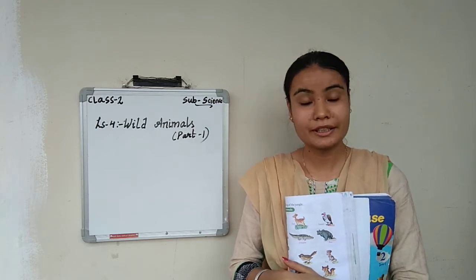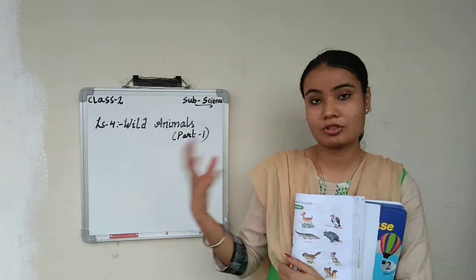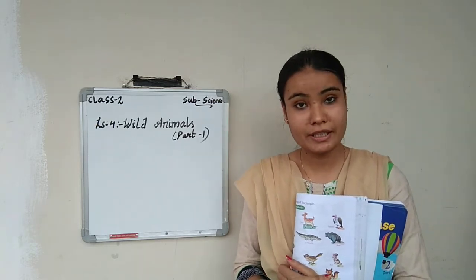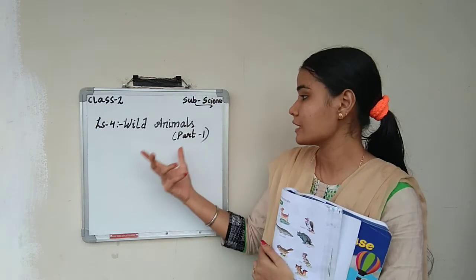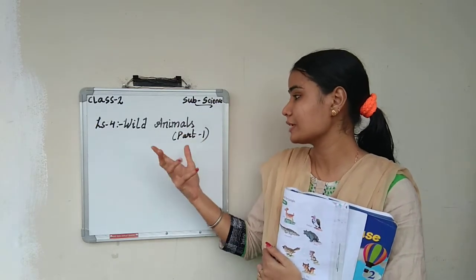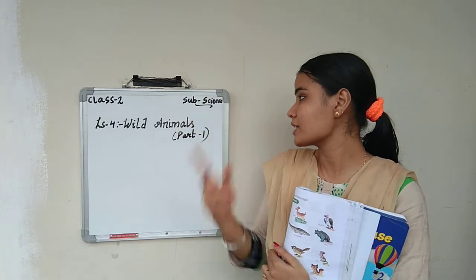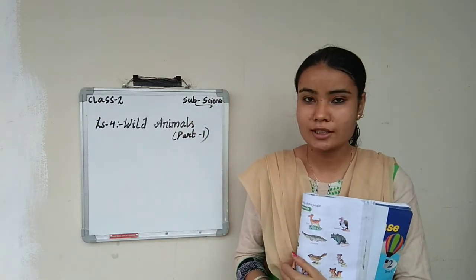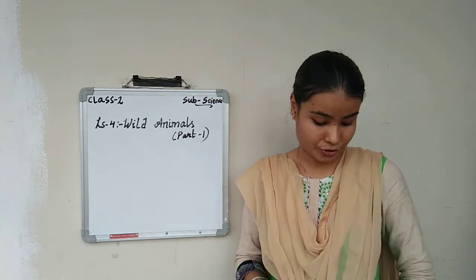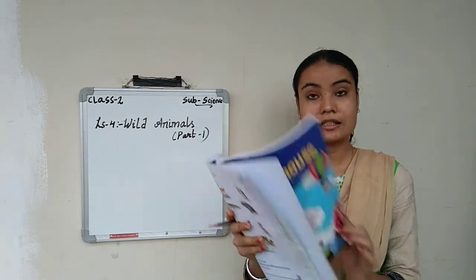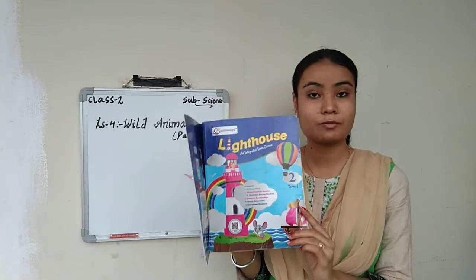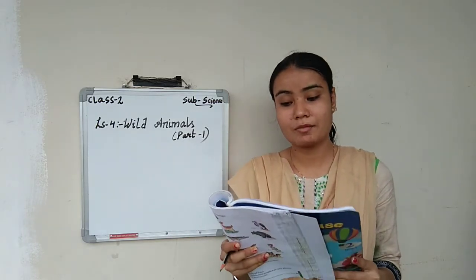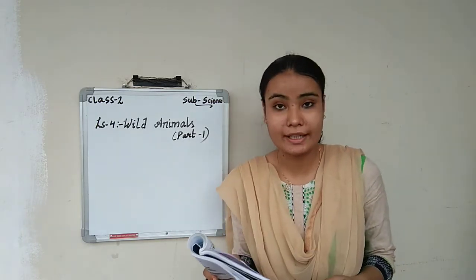So yes, everything is completed. Now again we should go with our syllabus. Three lessons were completed. Now we are going to start with lesson number 4, that is Wild Animals, for class 2, subject Science. So all the second class students take out your reader — term 1, page number 106, lesson number 4, Wild Animals.